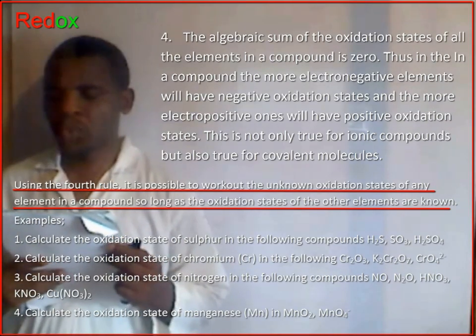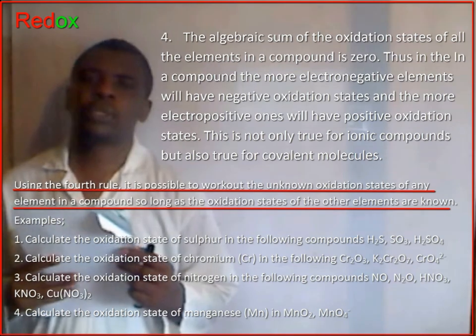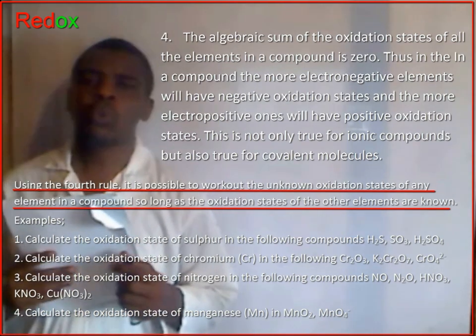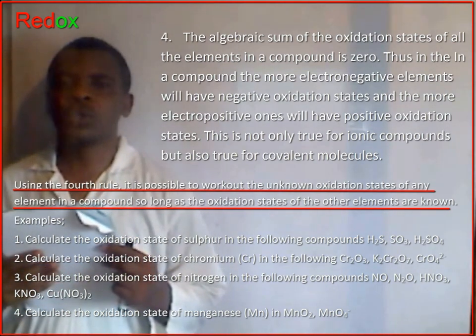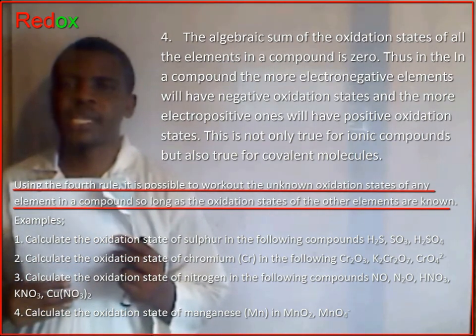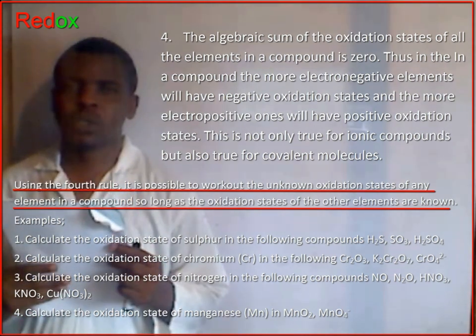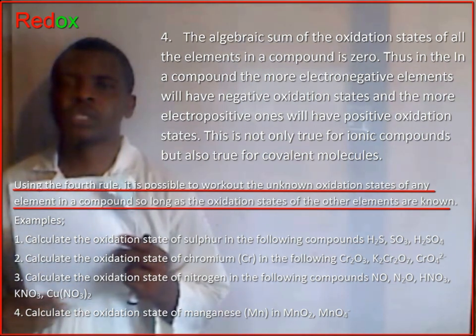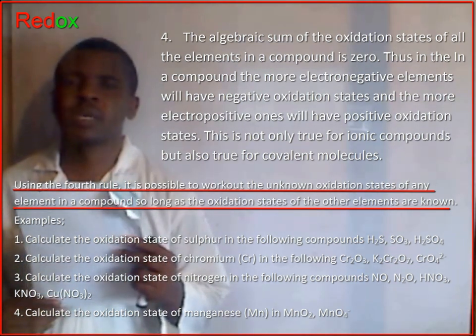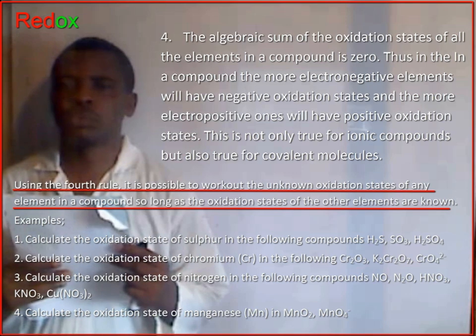Using the fruit rule, it is possible to work out the unknown oxidation states of any element in a compound, so long as the oxidation states of the other elements are known.